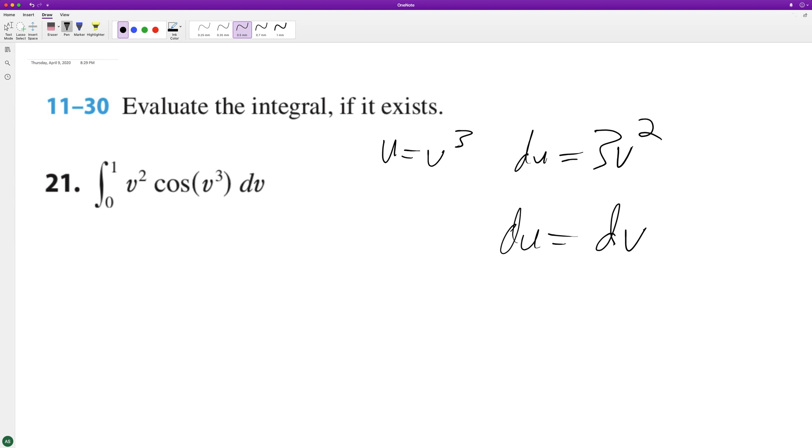With dv we only have v squared dv, so to get this equal to du we have to multiply by 1/3. So we have 1/3 the integral from 0 to 1 of cosine of u du.